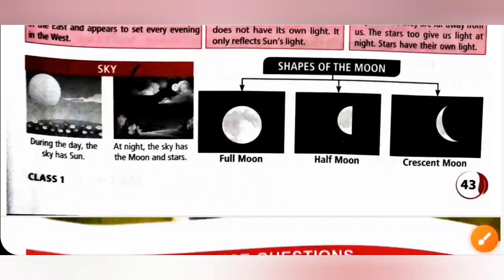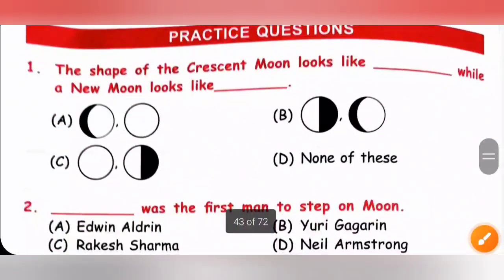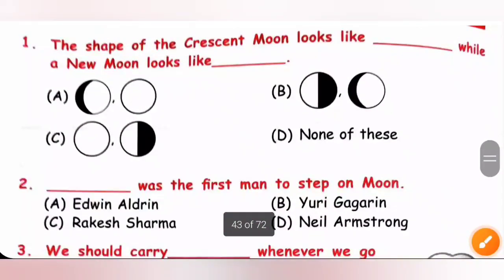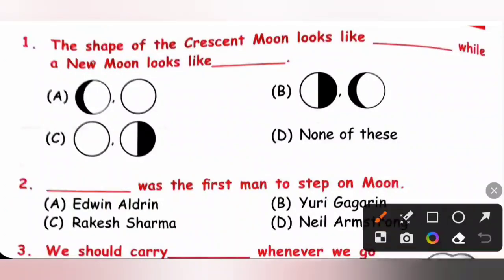Now let's see the practice questions. Question 1: The shape of a crescent moon looks like a crescent, while a new moon looks like — the moon is not visible on a new moon night. So none of the options are correct. Option D is the correct answer — none of these.